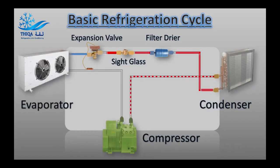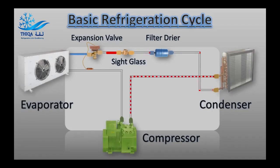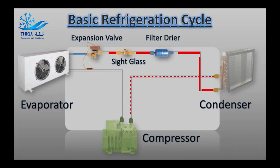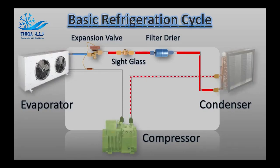Finally, the evaporator. The evaporator is the second heat exchanger in a standard refrigeration circuit, and like the condenser, it's named for its basic function. It serves as the business end of a refrigeration cycle, given that it does what we expect air conditioning to do: absorb heat.